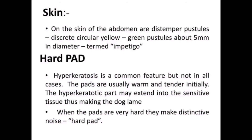When the skin is affected, distemper pustules appear on the abdomen — circular, yellow to green pustules approximately five millimeters in diameter, termed impetigo. Hyperkeratosis is a common feature of the foot pads, though not in all cases. The pads are initially warm and tender, and the hyperkeratotic tissue may extend into sensitive tissue, making the dog lame. When the pads become very hard they make a distinctive noise, which is why this is called 'hard pad disease.'